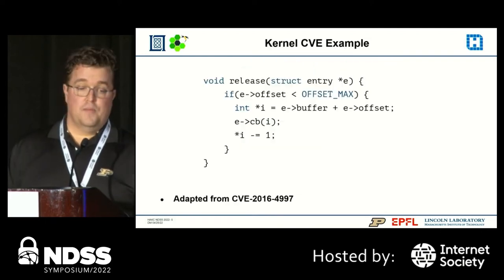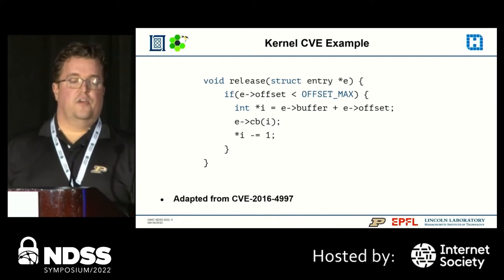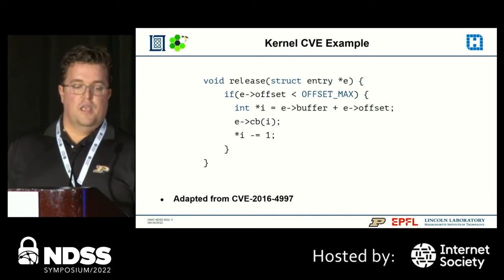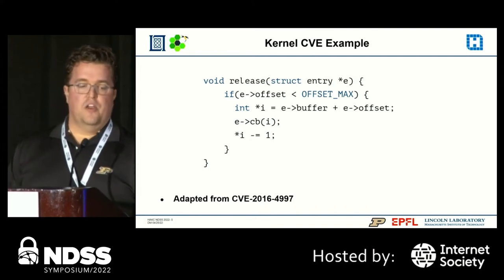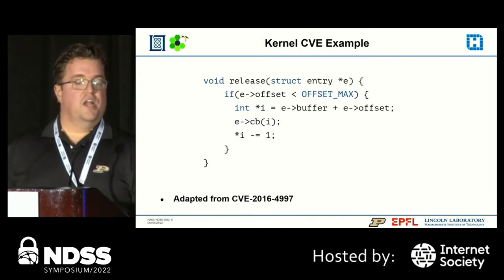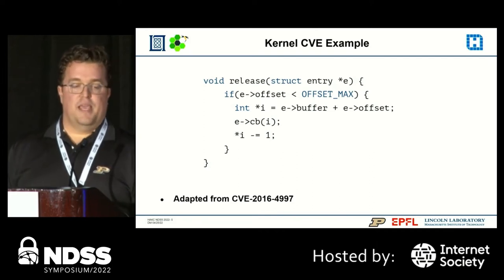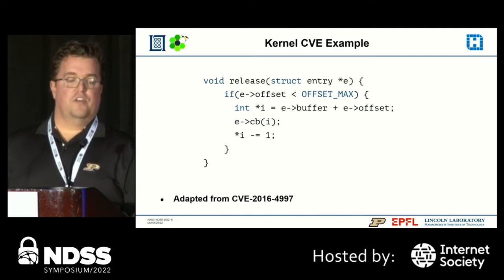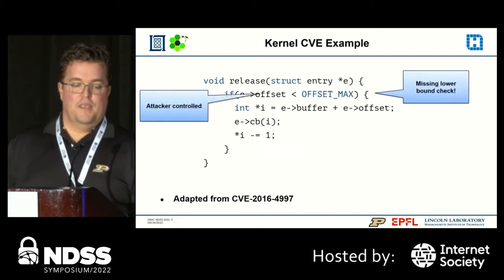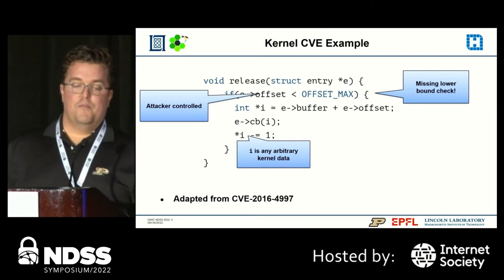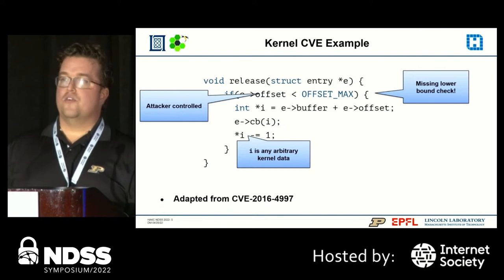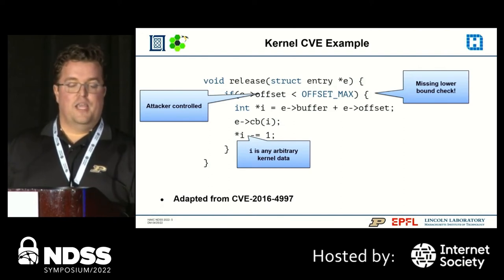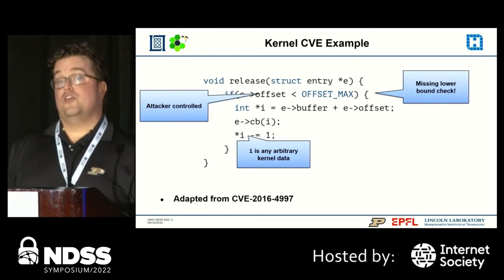HACKS targets kernel modules for compartmentalization. To illustrate the type of bug HACKS mitigates, consider this code, which is based on CVE-2016-4997. This code, which is part of a packet filtering mechanism, runs during error cleanup and can be used to decrement arbitrary kernel data. One of the members of struct entry is used to store an offset value, and if that offset value is lower than offset max, the offset value is used to compute a pointer to an integer. That pointer is then given to a callback function, and the underlying integer is decremented by one after the callback function returns. The bug is caused by a lack of a lower bound check in the first line. The offset member can be user controlled, and the lack of a lower bound check means that the pointer can point to arbitrary kernel data by making the offset a large negative number. An attacker can be made root by repeatedly calling this function and making I point to their user ID, for instance.